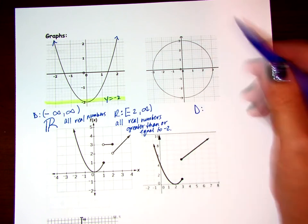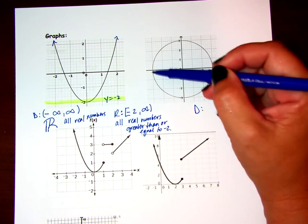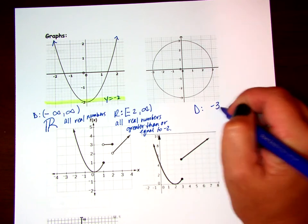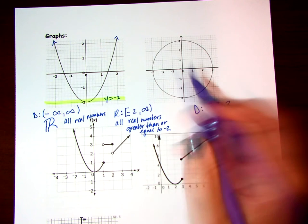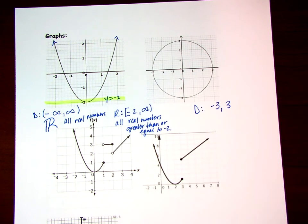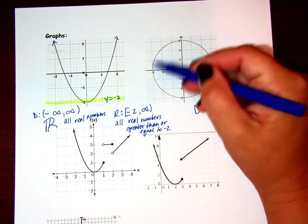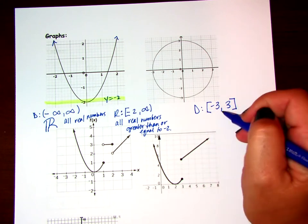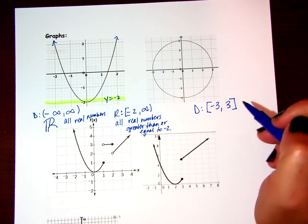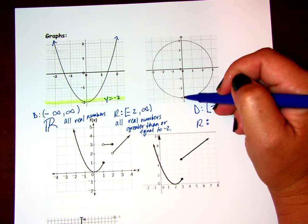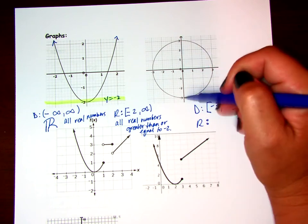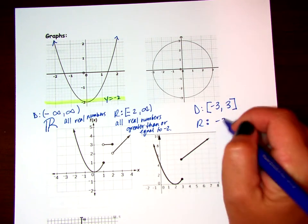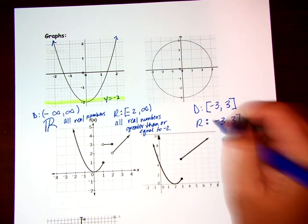For this circle, the domain goes from the leftmost point at negative three to the rightmost point at three. All of these values are included, so we use closed brackets: negative three to three. For the range, because all points on the circle are equidistant from the center, the range also goes from negative three to three with closed brackets.